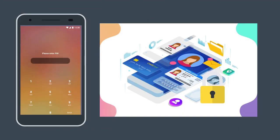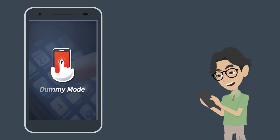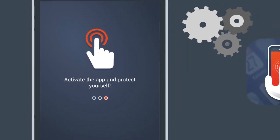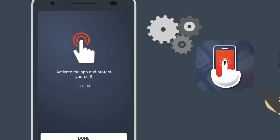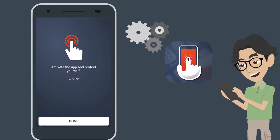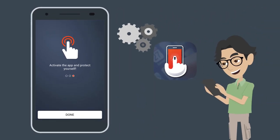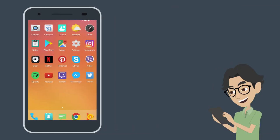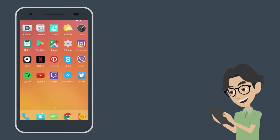To use the app, users simply download and sign up using email or social media credentials. From there, the user can activate Dummy Mode before handing off the phone to friends, family, or significant others.